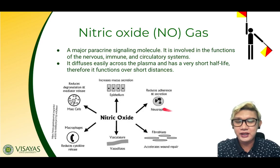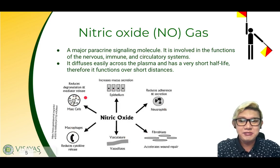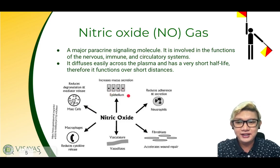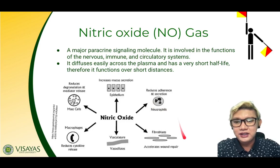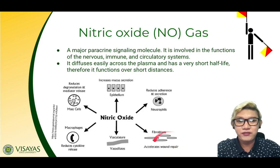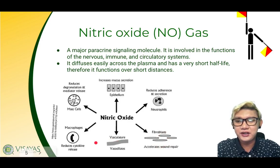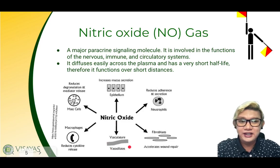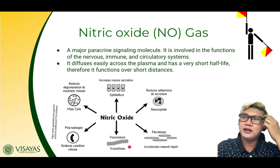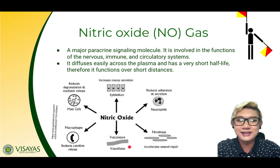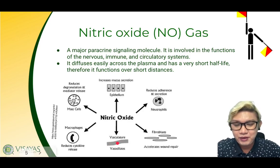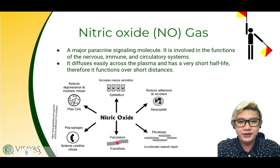Here are some of the key functions of nitric oxide gas. It reduces degradation and mediator release in mast cells. It increases mucosecretion in epithelial cells. It reduces adherence and secretion of neutrophils. It accelerates wound repair and stimulates production of fibroblasts. It is also important for the reduction of cytokine release in macrophages. And most importantly, it is important in vasodilation — vasodilators relax the blood vessels and increase blood flow towards a certain organ.